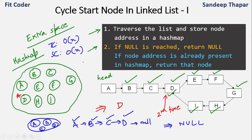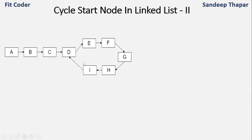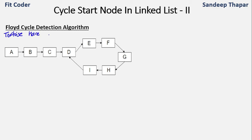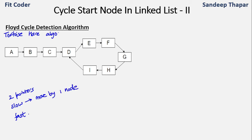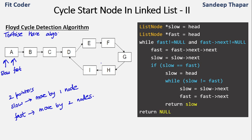The second method is known as Floyd's cycle detection algorithm, or the tortoise and hare algorithm. In this method we take two pointers: slow and fast. The slow pointer moves by one node and the fast pointer moves by two nodes. Both slow and fast start from the head of the linked list. In the previous video we discussed how to detect a cycle using Floyd's algorithm.